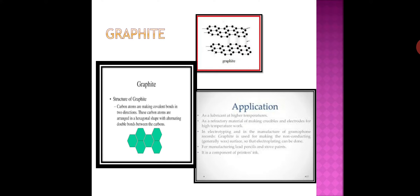Graphite is found in its natural state in Russia, New Zealand, and America. In graphite, every carbon atom is bonded to three other atoms in such a way that a hexagonal layer structure is formed. Graphite crystals are made of many sheets or layers of carbon atoms, and the layers slip over each other on applying pressure. Graphite is found in nature as black, soft, brittle, and slippery. Due to its layered structure, graphite can be used for writing on paper.